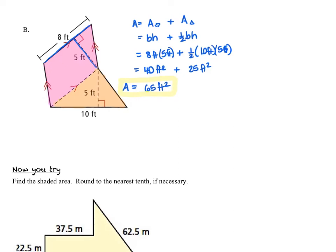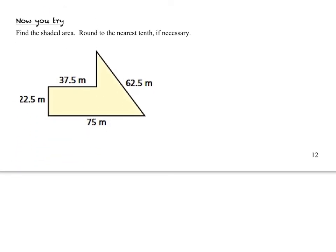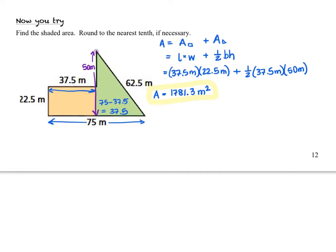Now work on the Now You Try and turn the video back on when you're ready to check your work. Remember: first identify the composite figures, find the area for each, and add the areas together to get the total. There is a missing length — from here to here, that is 50 meters. The figure was a rectangle and a triangle, and you add those two areas together to get the total area of the composite figure.